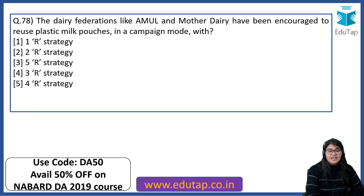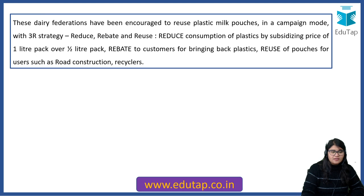Dairy federations like Amul and Mother Dairy have been encouraged to reuse plastic milk pouches in a campaign mode using a 3R strategy: reduce consumption of plastics by subsidizing price of 1-litre pack over half-litre pack, rebate to customers for bringing back plastic, and reuse of pouches for uses such as road construction and recycling.